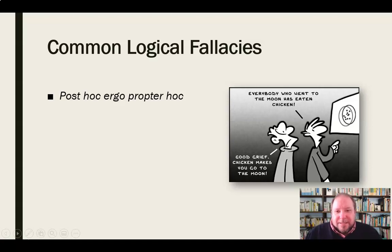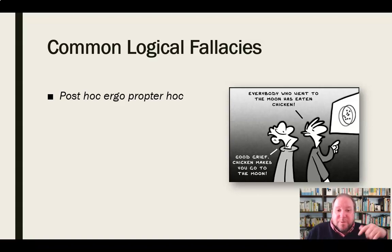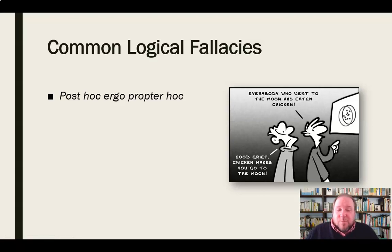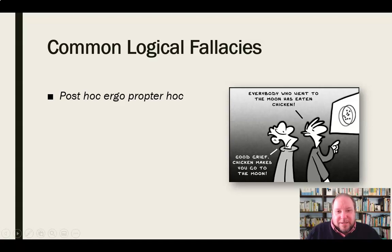The first is called post hoc ergo propter hoc, which means 'after, therefore because of.' Just because something happened after something else doesn't mean there's a relationship between the two — that's illogical. For example: everybody who's been to the moon has eaten chicken, but that doesn't mean anybody who eats chicken goes to the moon. Just because you eat chicken does not mean you go to the moon. Going back to the Capitol insurrection, that's the argument Trump's supporters would make: just because the riot happened after his speech does not necessarily demonstrate a relationship between the two. Just because it happened afterward does not mean you can attribute what happened to him — that's a post hoc ergo propter hoc argument.